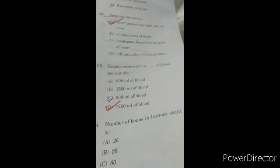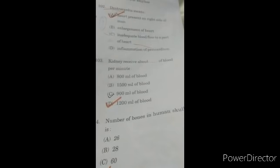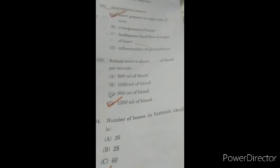Question 103: kidney receive about dash of blood per minute. This is D option, 1200 milliliters of blood. Question number 104: how many bones are present in human skull? In human skull there are 29 bones.